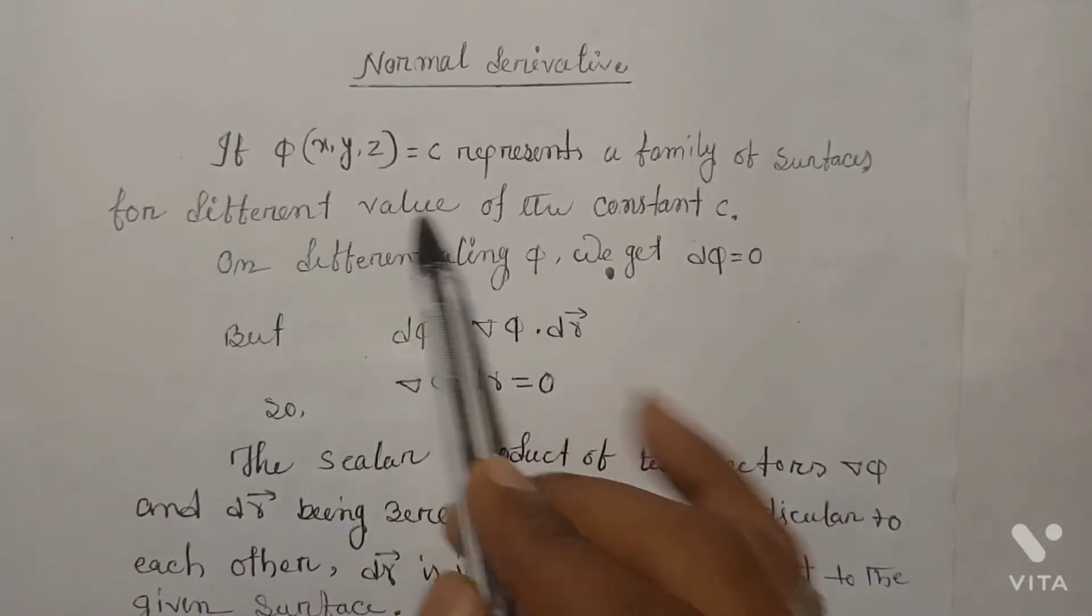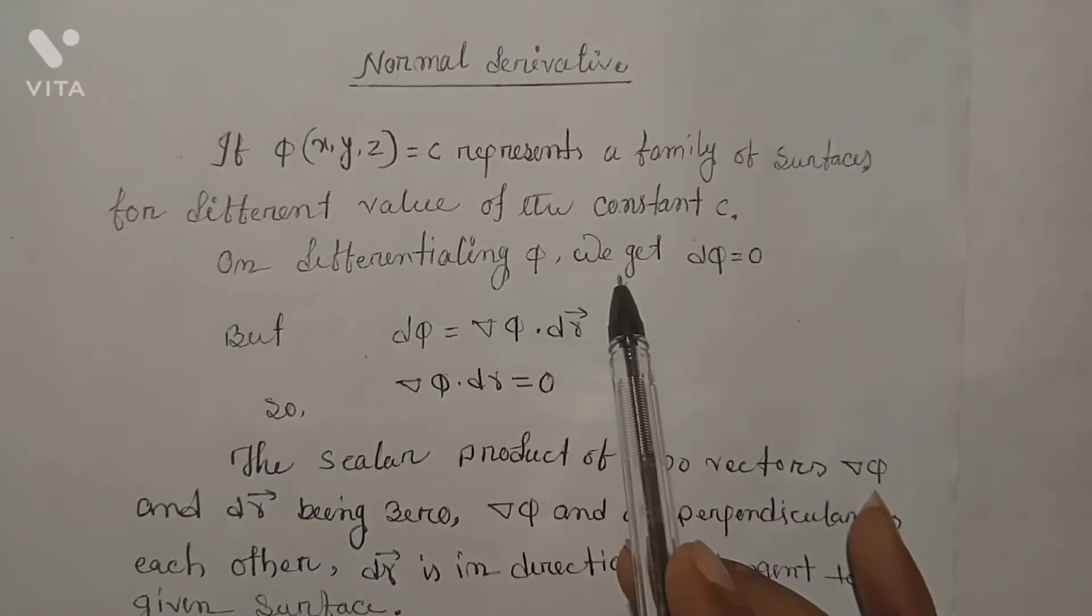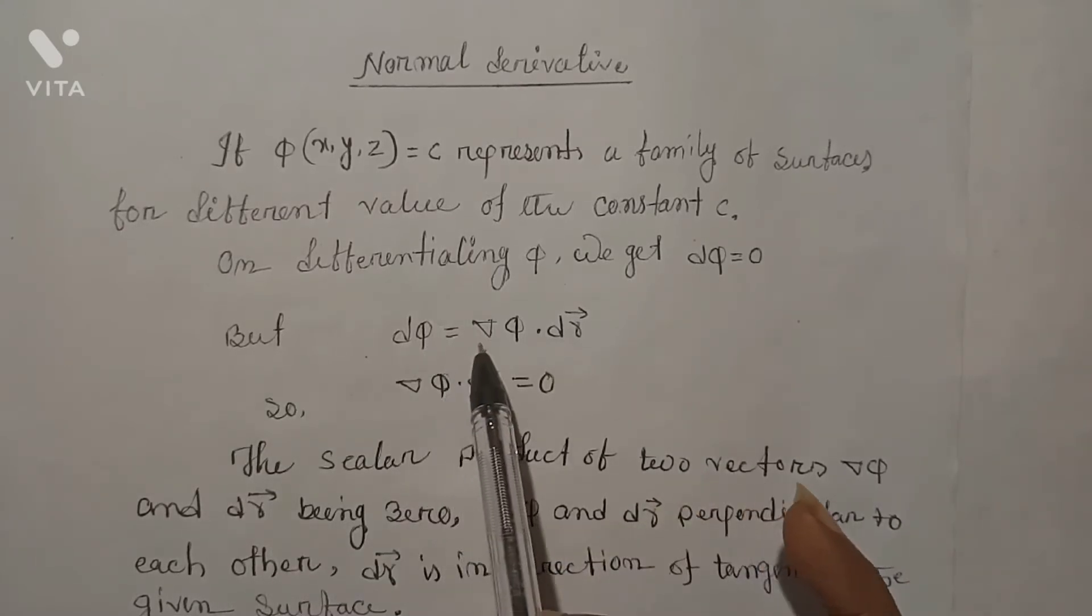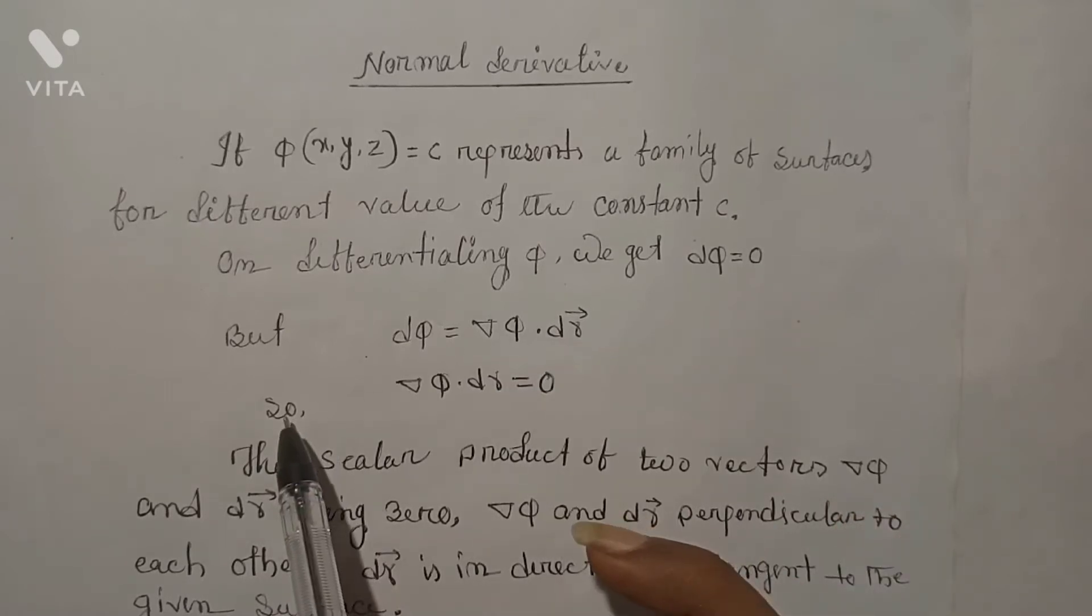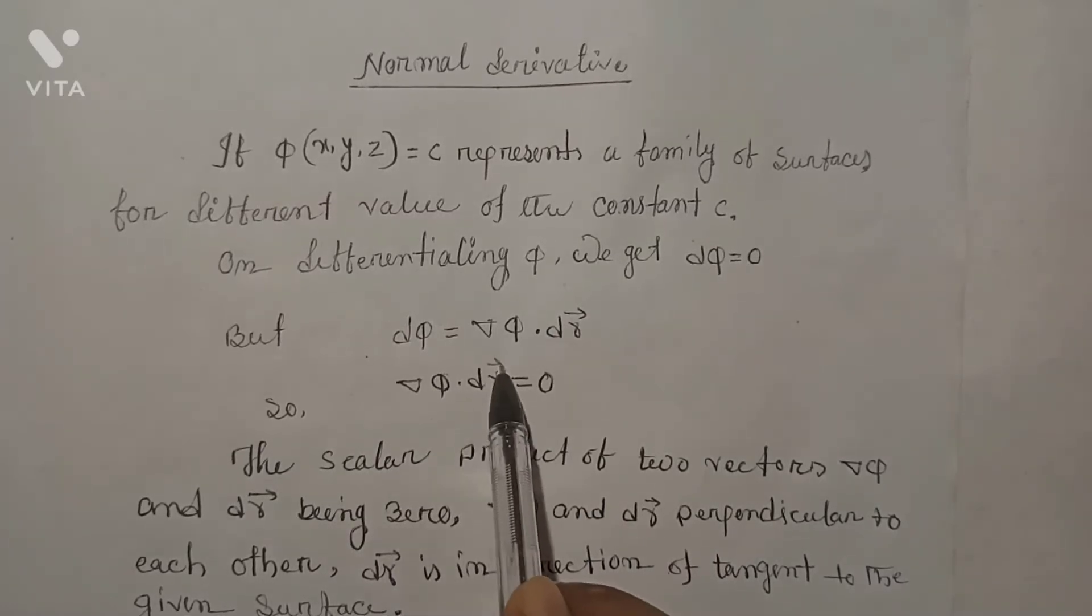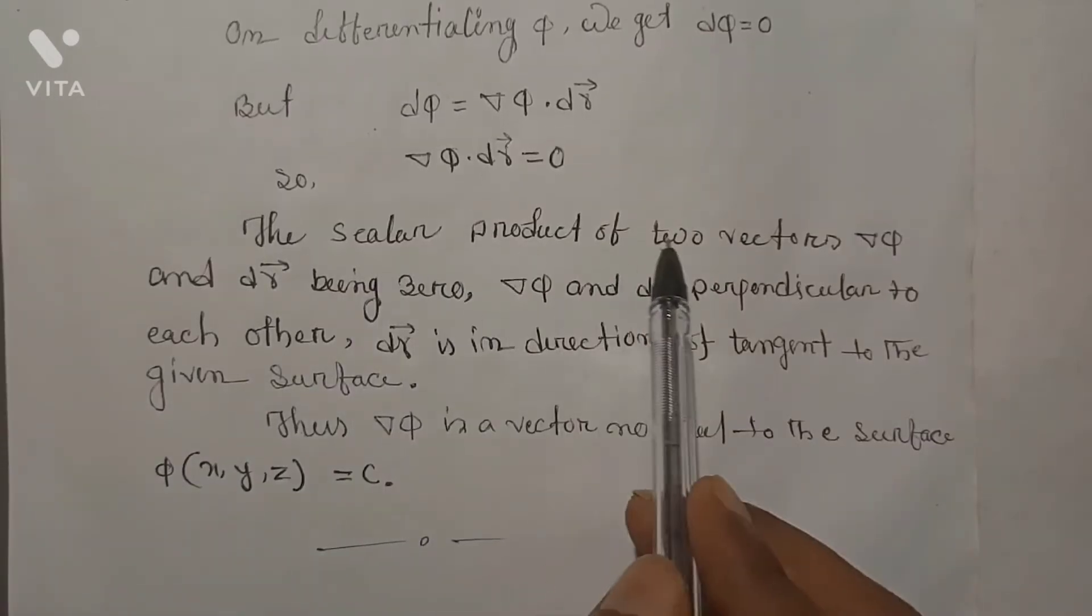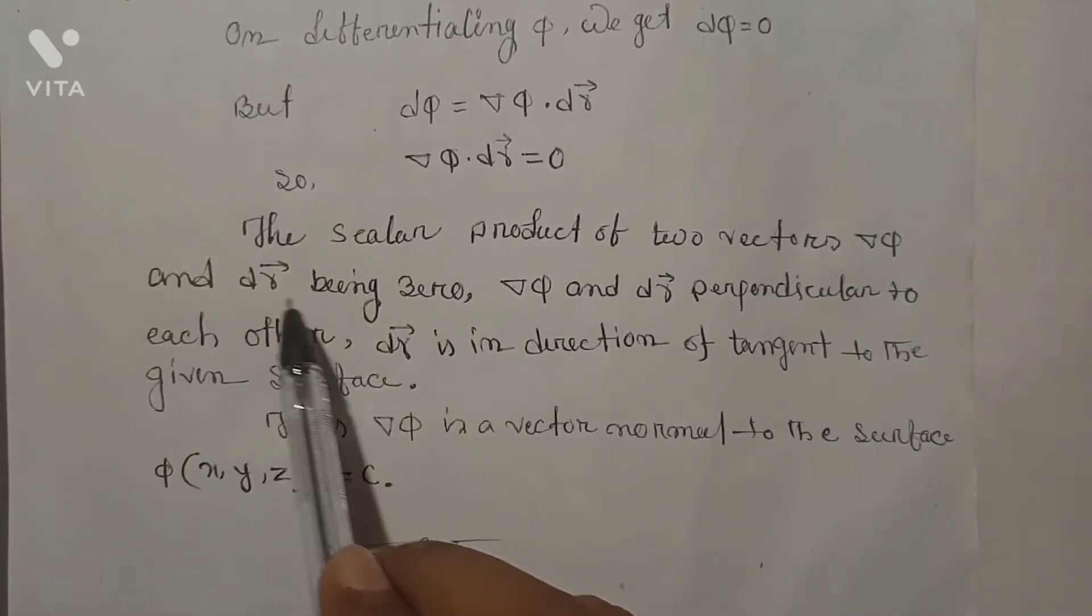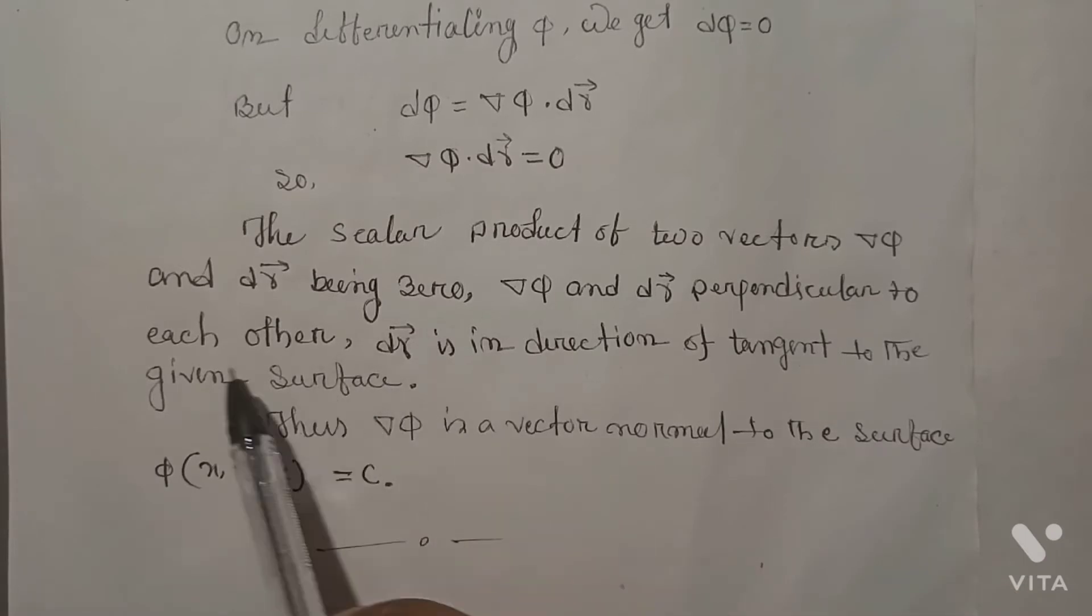On differentiating φ we get dφ = 0, but dφ = ∇φ · dr, so ∇φ · dr = 0. The scalar product of two vectors ∇φ and dr being 0, ∇φ and dr are perpendicular to each other.